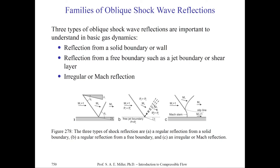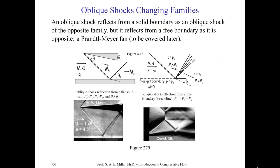Remember, when a shock wave reflects off a free boundary, it can indeed reflect as an expansion wave or, in certain cases, a shock wave, given some particular boundary conditions of the flow. These particular oblique shock waves indeed change families from right running to left running waves respectively. If an oblique shock wave reflects from a solid boundary as an oblique shock wave, it changes to the opposite family. It will usually reflect off a free boundary as an opposite family wave.